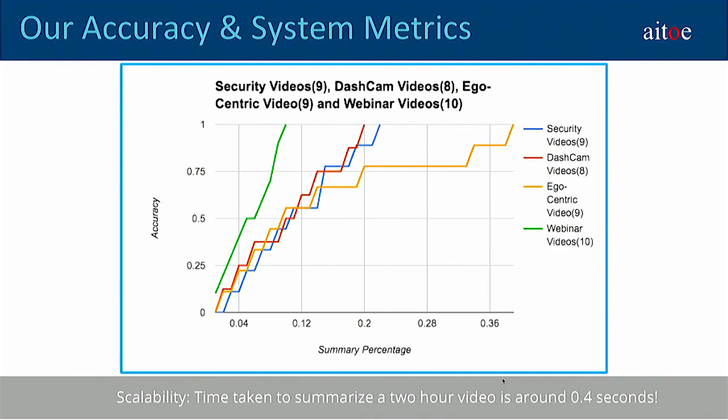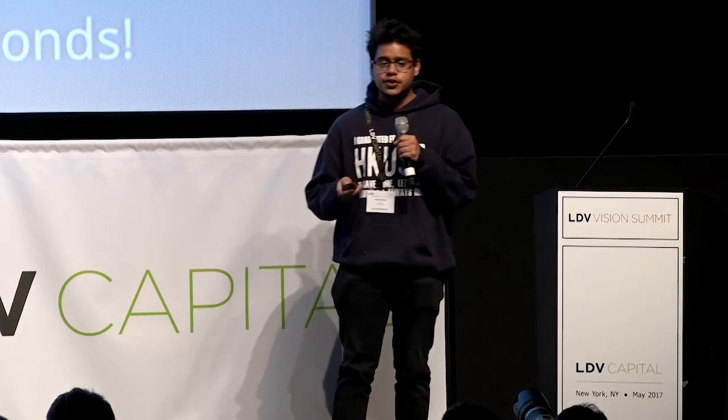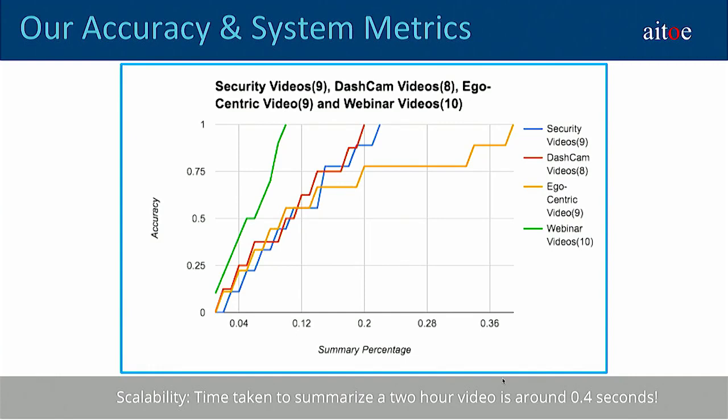The experiments we conducted try to show the minimum summary percentage needed to cover all key events. For surveillance videos, at around 20%, we can capture all key events without missing out on anything — meaning you can watch a one-hour long surveillance video in just 12 minutes. We've done this analysis across several categories of videos and find that by keeping the summary percentage at 30%, we can express all key events of any category.